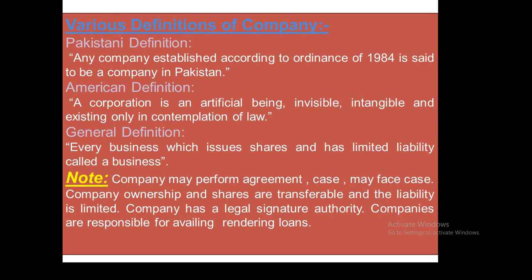Company ownership and shares are transferable and the liability is limited. A company has a legal signature authority — it is a legal entity. Unlike sole proprietorship, a company has the advantage of legal authority. Cases can be filed, loans can be taken, and companies are responsible for their loans and liabilities.